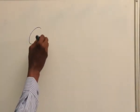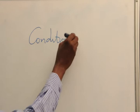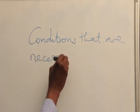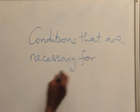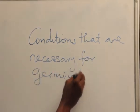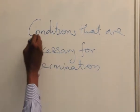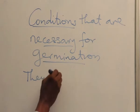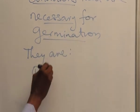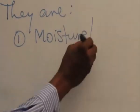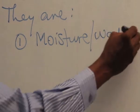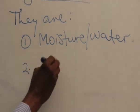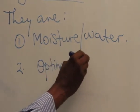Conditions that are necessary for germination. There are: one, moisture or water; two, optimum or optimal temperature.